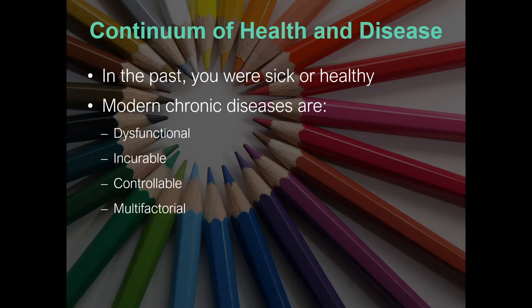Now modern disease is not so binary — it's a spectrum. There's a progression towards a general failing of systems in the body or a reduced function of systems. Things don't often stop in their tracks and suddenly 'you have this disease.' There's a progression — towards being more insulin resistant, towards becoming diabetic. Most chronic diseases exhibit this spectrum nature.